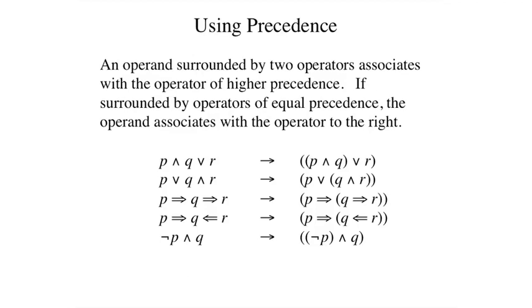The examples here show how these rules work in various cases. The expressions on the right are the fully parenthesized versions of the expressions on the left. In the first case, q in the middle is associated with the AND because AND has higher precedence than OR. Similarly, in the second sentence, q is associated with the AND on the right side.